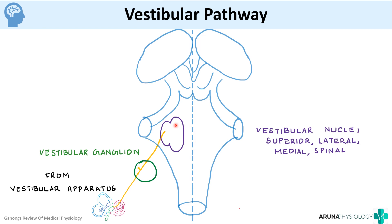The vestibular nuclei is actually a complex of four nuclei: superior, lateral, medial, and spinal. From the vestibular nuclei, fibers can go in many directions. One pathway goes to the cerebellum — we have already learned about the role of the vestibular cerebellum and how fibers go to the floccular nodular lobe. Some fibers can also go directly to the cerebellum without passing through the vestibular nuclei.